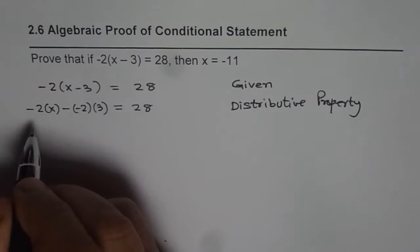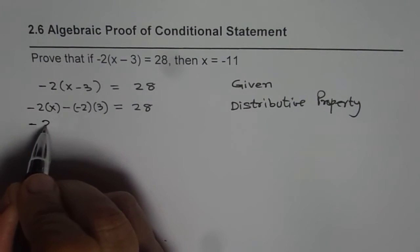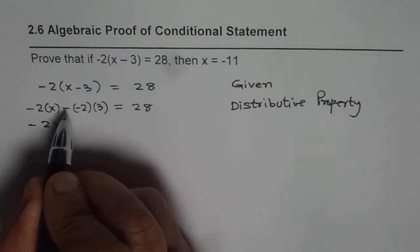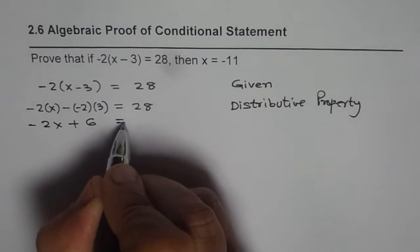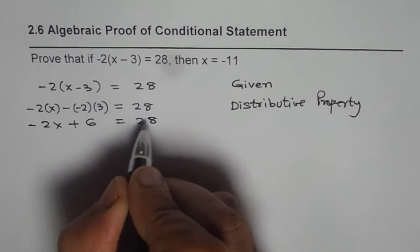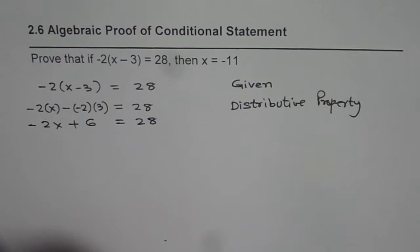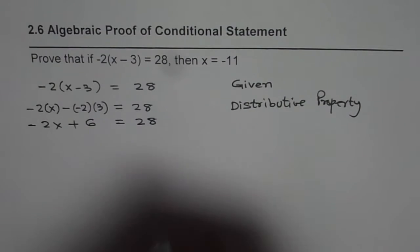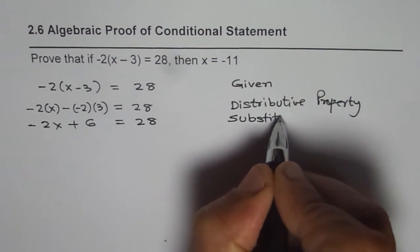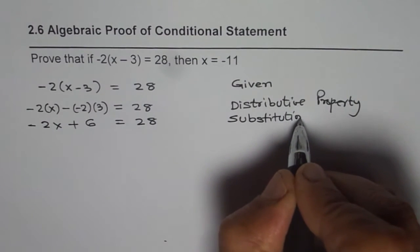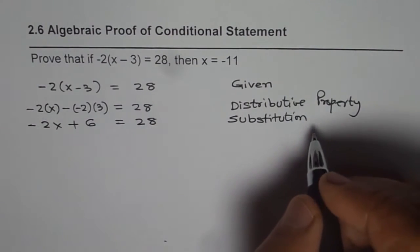We can simplify it. We can write this as -2x + 6 = 28, since minus minus becomes plus. Which property have I used at this stage? We call it substitution property. I hope that is a good review for you of all the algebraic properties you have learned so far.